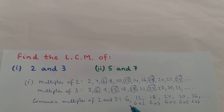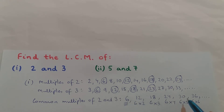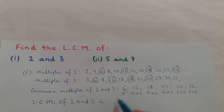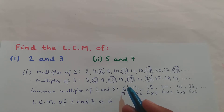So the common multiples of 2 and 3 are: 6, 12, 18, 24, 30, 36, and so on. Out of these, the lowest or smallest common multiple is 6. All the other common multiples of 2 and 3 are greater than 6. So 6 is the lowest common multiple of 2 and 3.